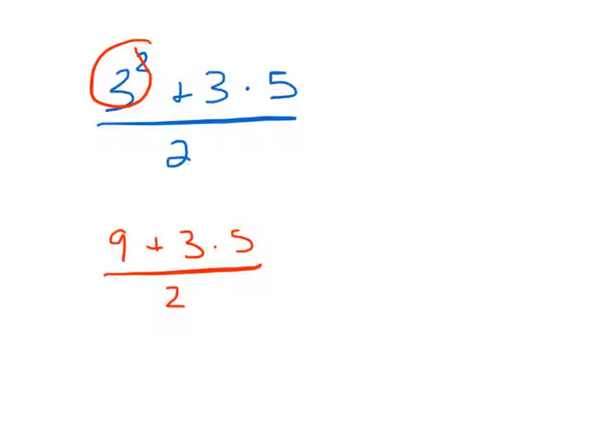And then I can do 3 times the 5. So, I'll have 9 plus 15 over 2. Now, in this case, you might say, okay, I've got to do the division first. But do I have to do 15 by 2 and 9 by 2? Well, in this case,